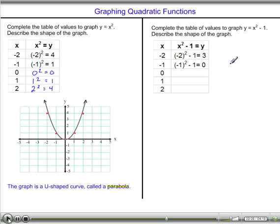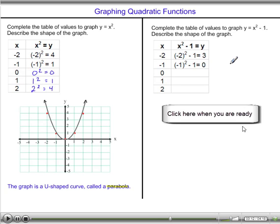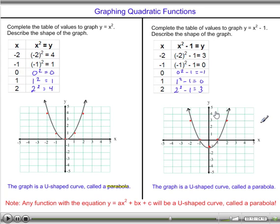So go ahead now and try this question that's appeared on the right. And here's the solution. Notice here that we, again, got a U-shaped curve as our graph. So once again, this is called a parabola.